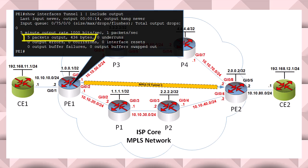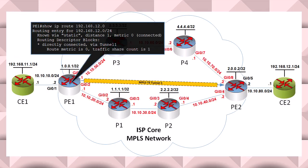Next, let's look at PE1's routing table. Here you can see the specific route is routed through our LSP tunnel. So far so good.